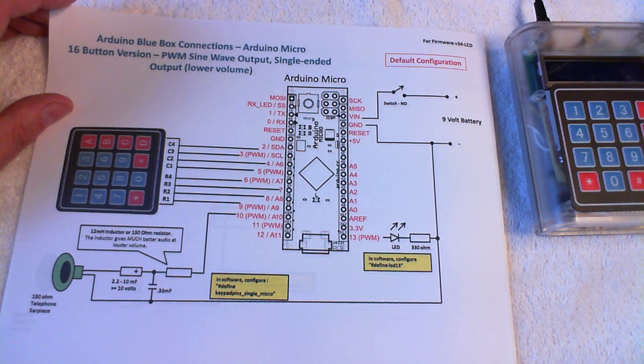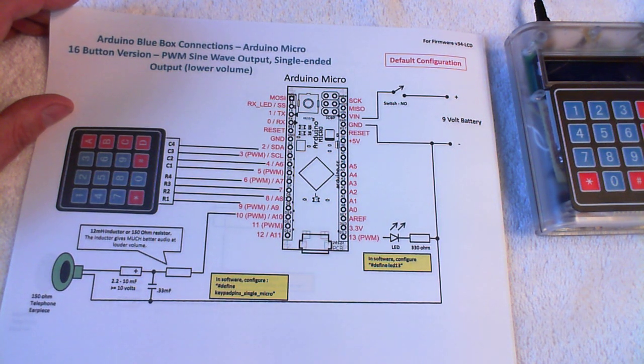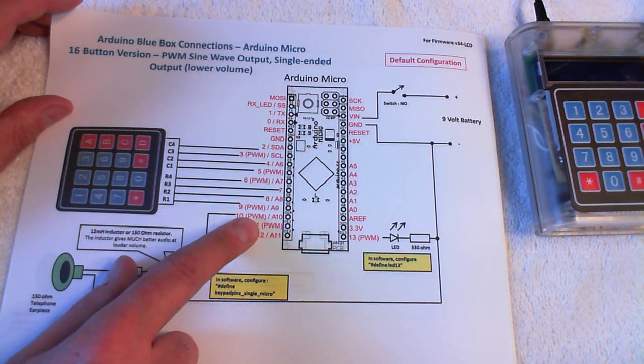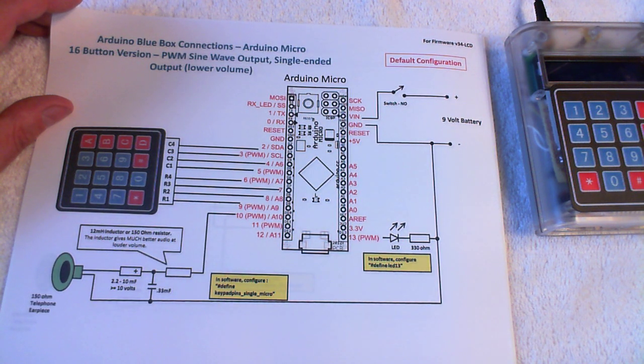Because the maximum output voltage is only two and a half volts rather than five volts on the sine wave, you get half the volume, basically, or half the voltage at least. The perceived volume might be a little bit different. But if you use the single-ended mode, it does allow you to pass your keypad connection straight through into the Arduino without having to shuffle around the pins.